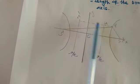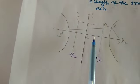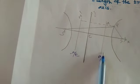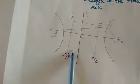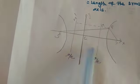This MM dash length is equal to 2A by e. How to get this is the length of lattice rectum A by e. This one is minus A by e. Now we are going to find the distance.